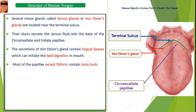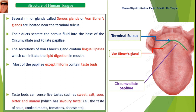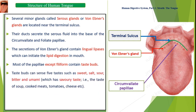Most of the papillae contain taste buds. Taste buds can sense five tastes: sweet, salt, sour, bitter, and umami. Umami has a savory taste — that is, the taste of soup, cooked meats, tomatoes, cheese, etc.